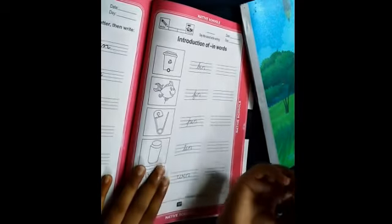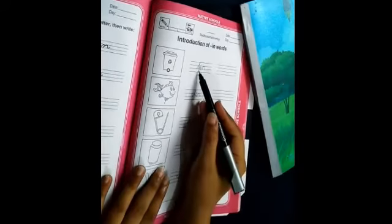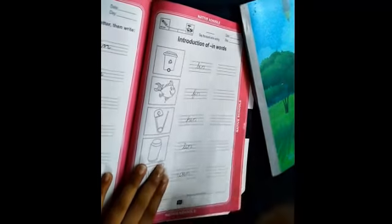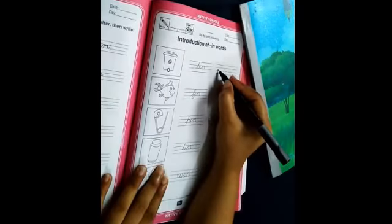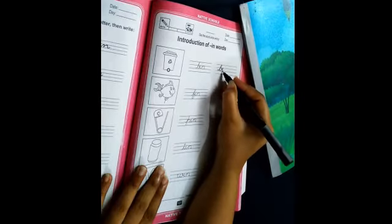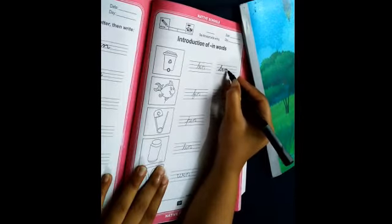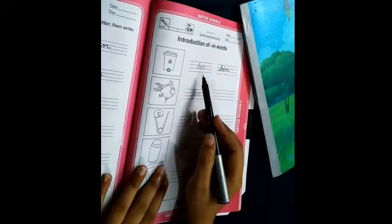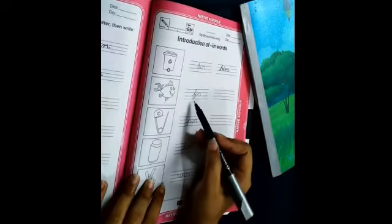For suppose, I-N-A bin. You can see dustbin. You can write in the first line like this. And we will join I and then N-A, I-N-A bin. As it is students, you can write in the first line.